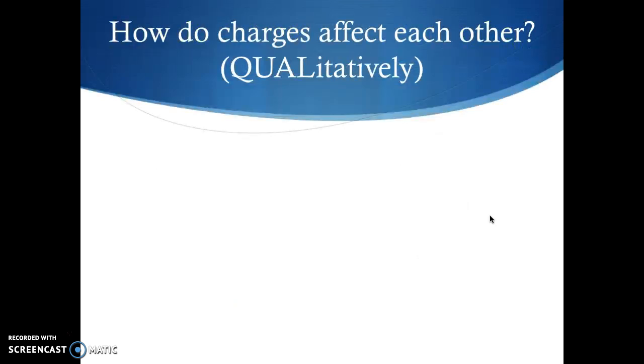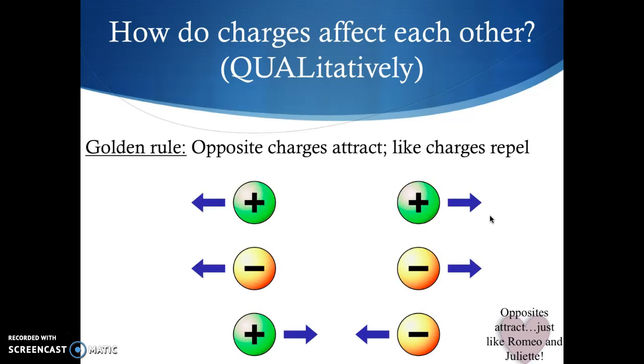So let's start to talk about how charges affect one another. We're going to start by talking qualitatively and then come back and talk about this quantitatively. Qualitatively, we have the golden rule of electrostatics that opposite charges will attract and like charges will repel. I kind of remember this by thinking about Romeo and Juliet. They're opposites and of course they attract. What this comes down to is if you have a positive and a positive, these would be an example of like charges, they would feel a repulsive force. A negative and negative also feel a repulsive force. And opposite charges, a positive and a negative, would feel an attractive force.